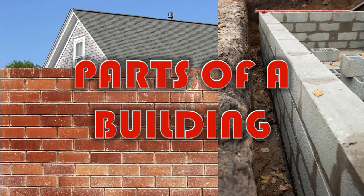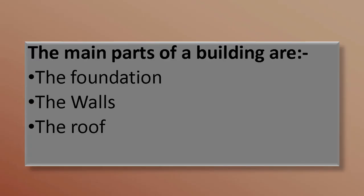Parts of a Building. The main parts of a building include the foundation, the walls, and the roof.